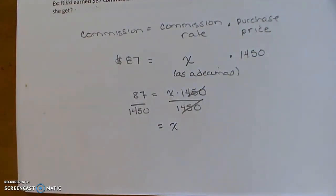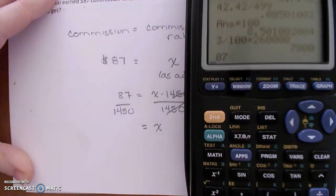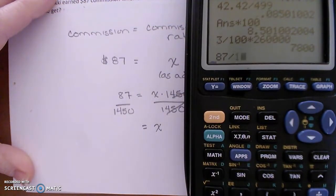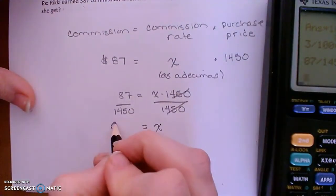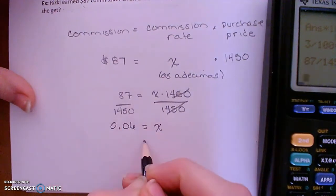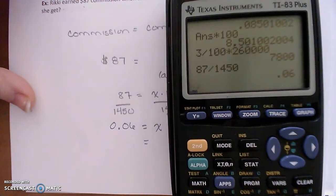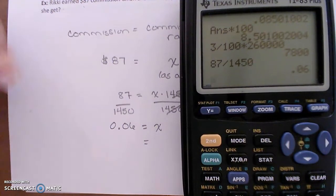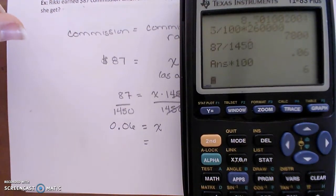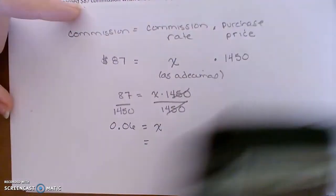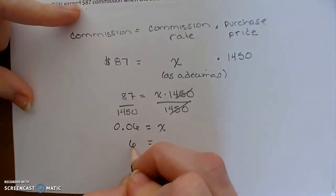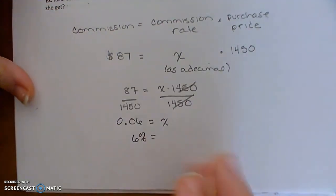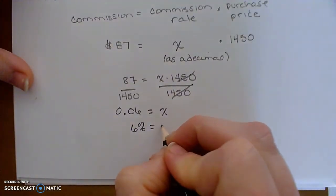Solve for X by dividing both sides by $1,450, which gives X equals $87 divided by $1,450, equaling 0.06. To write that as a percent, either move the decimal point two places to the right or multiply by 100, which gives 6%. So the commission rate is 6%.